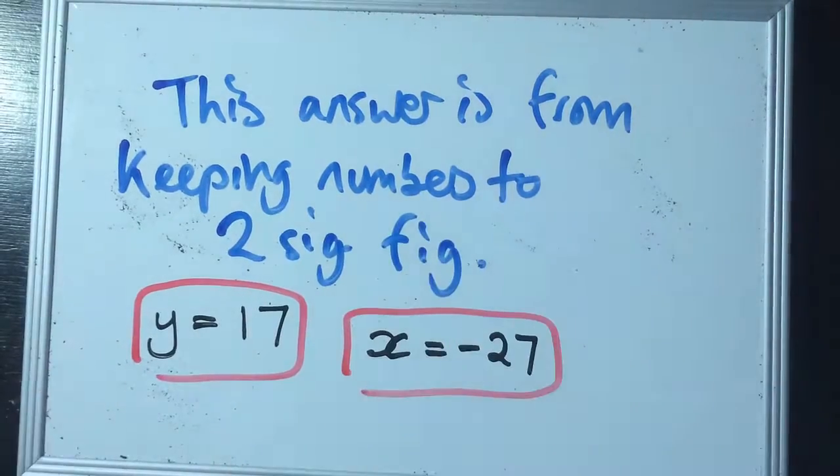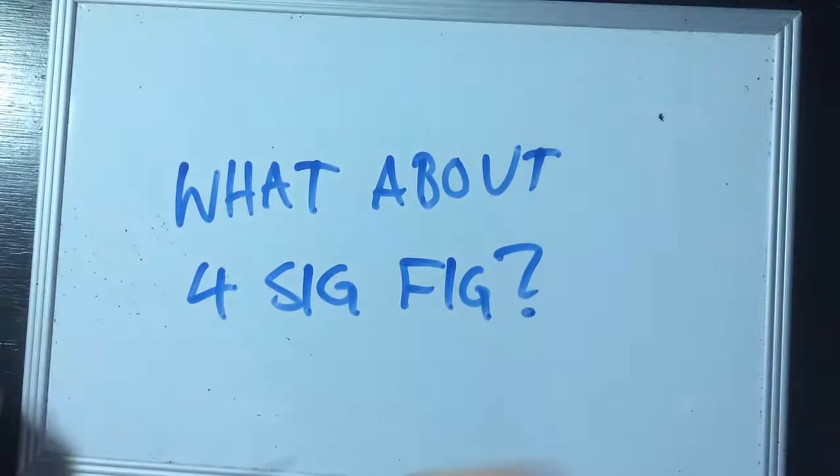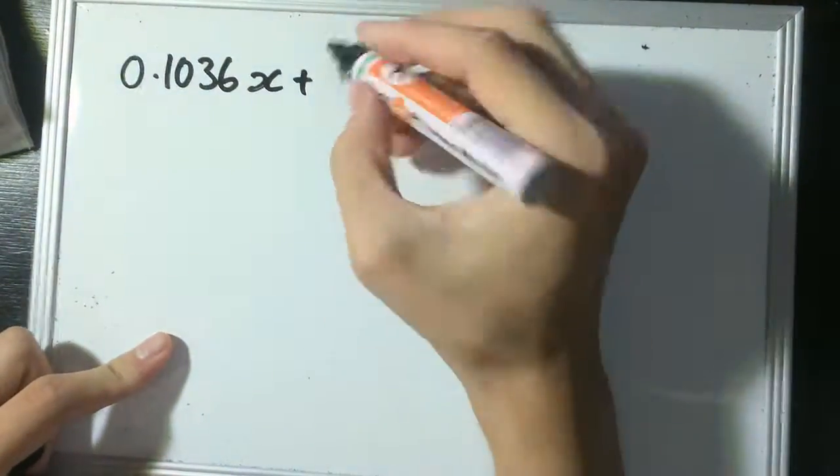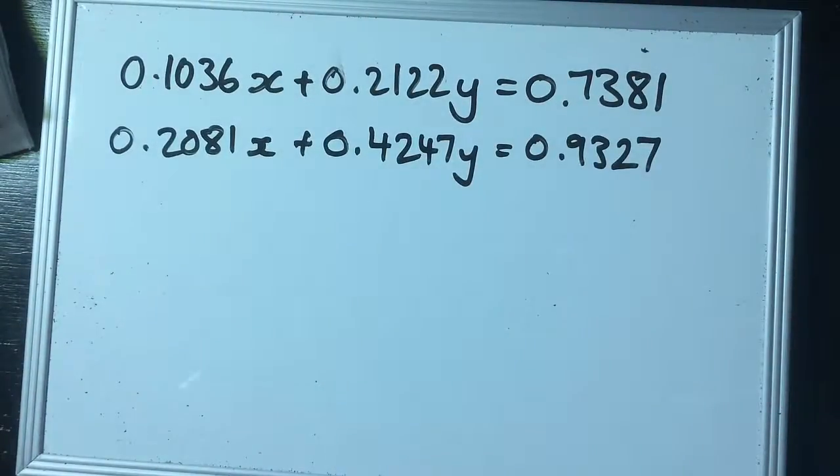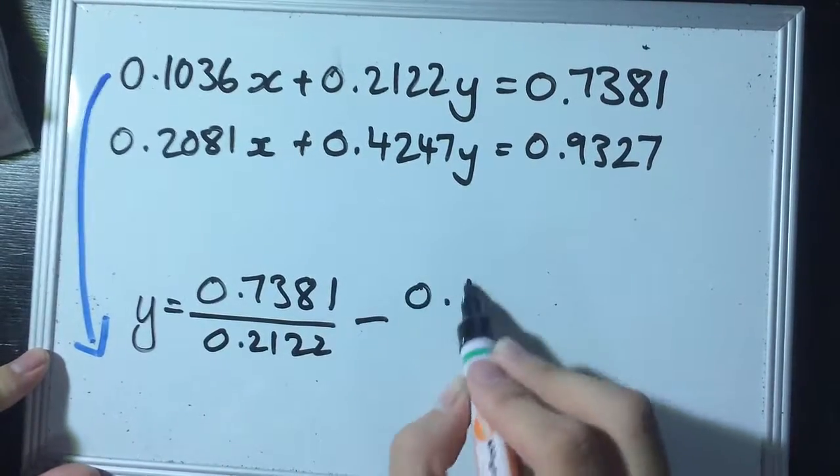But instead, let's up it a bit and use four significant figures. What would happen? So, again, using the same pair of simultaneous equations, but instead keeping all the numbers to four significant figures. Take the first equation, rearrange it so that y is the subject of the equation.